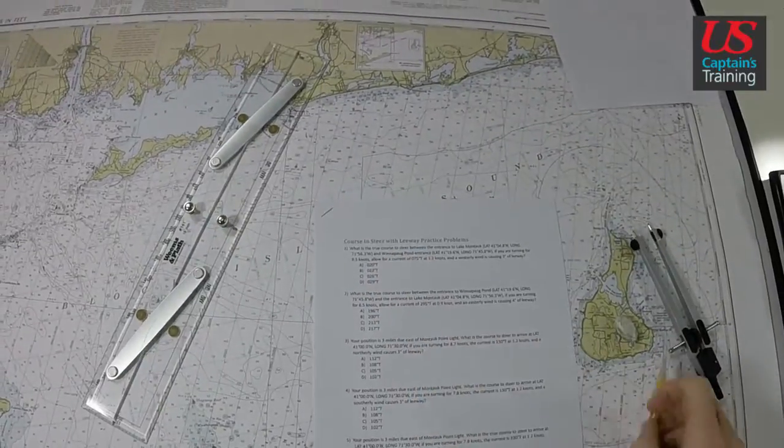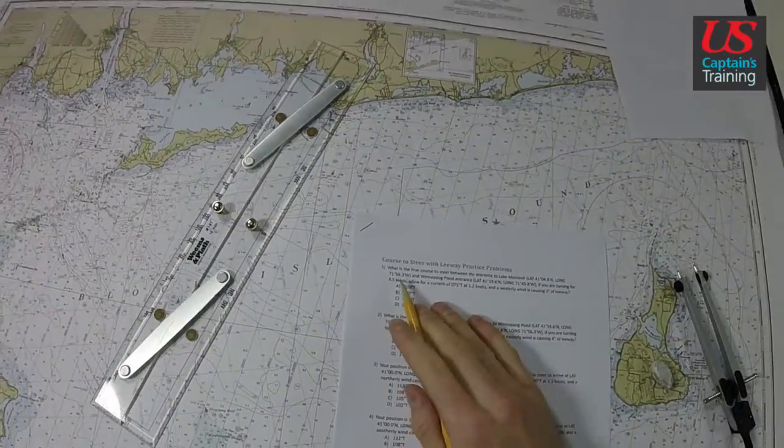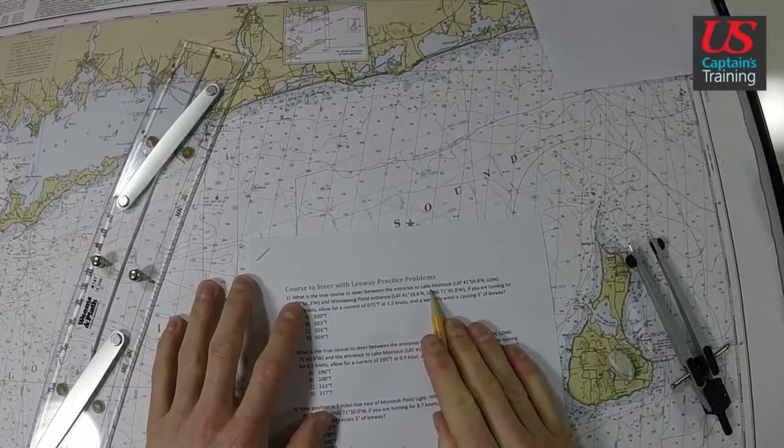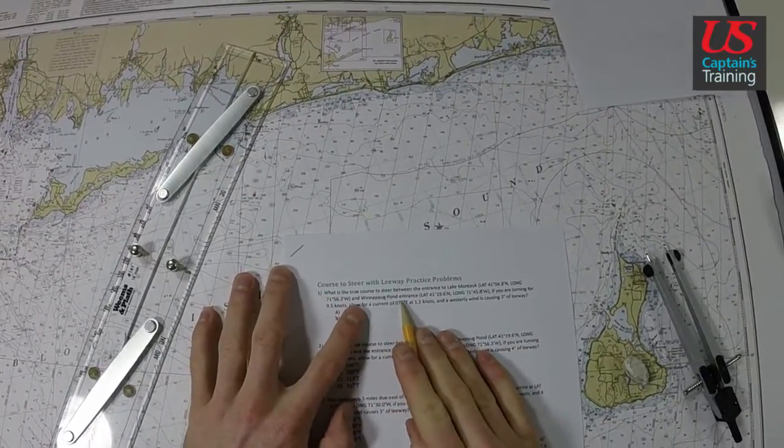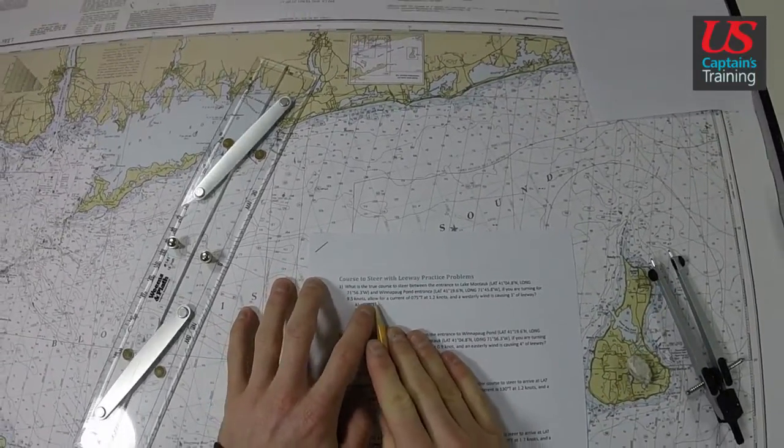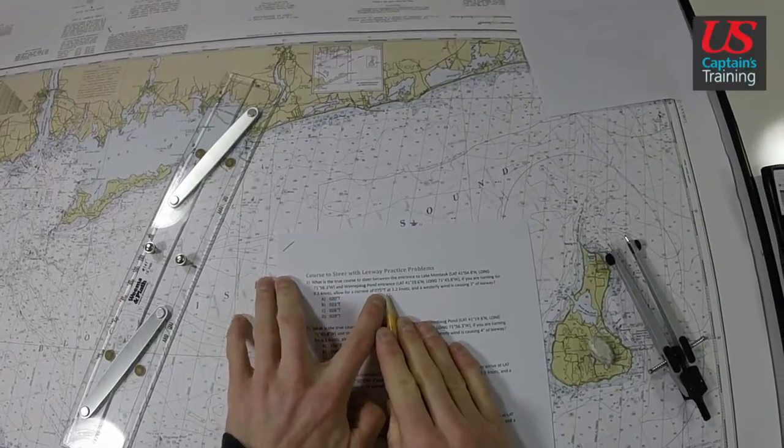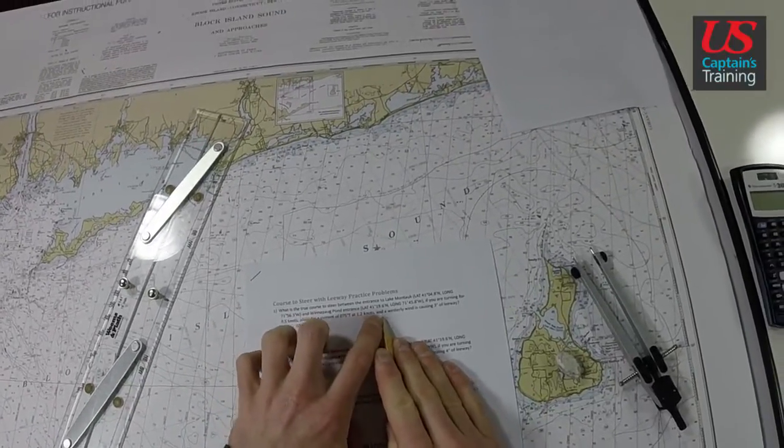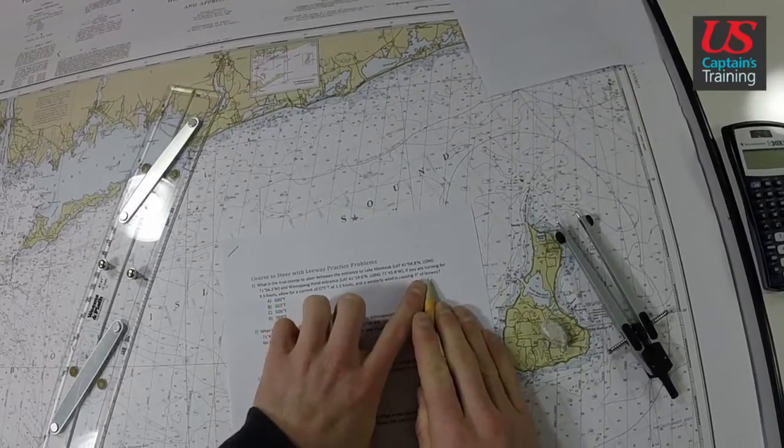Course to steer with leeway practice problem number one: What is the true course to steer between the entrance to Lake Montauk and Winnipeg Pond entrance if you are running for 9.5 knots and allow for a current of 75 degrees true at 1.5 knots and a westerly wind causes 3 degrees of leeway?